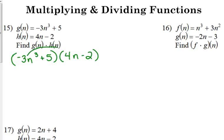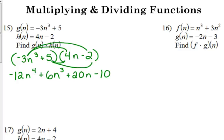First term times first term, negative 3 times 4 is negative 12, n cubed times n is n to the 4th. Multiplying the outside terms, negative 3 times negative 2 is positive 6, and we've got n cubed attached to that. Our inside terms, 5 times 4n, 5 times 4 is 20n, and multiplying the last two terms, 5 times negative 2 is negative 10.